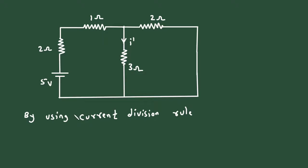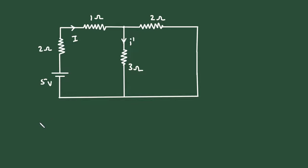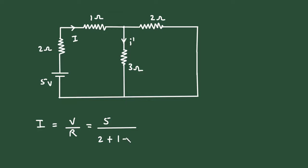Here we can see this current I. Before that, we have to find this current I. So I is equal to V divided by R. The value of voltage here in this circuit is 5V, and the value of resistance — here we can see this 2Ω and 3Ω are connected in parallel, and it is connected in series with this 1Ω and 2Ω. So it will be 2Ω plus 1Ω plus the parallel combination of 2Ω and 3Ω.